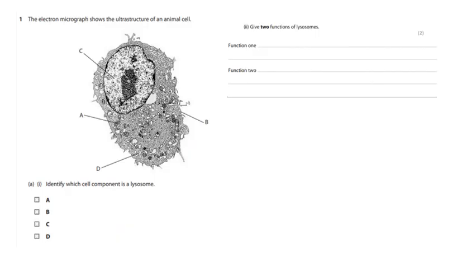The electron micrograph shows the ultra structure of an animal cell. Which is a lysosome. Now it's not immediately obvious, actually. One thing I can do is just by elimination. C is obviously the nucleus. B is the membrane, it's pointing at the outside. Now looking at A and D, I reckon A is probably a mitochondria. And D is, that means D is the lysosome. So I reckon that the answer is D.